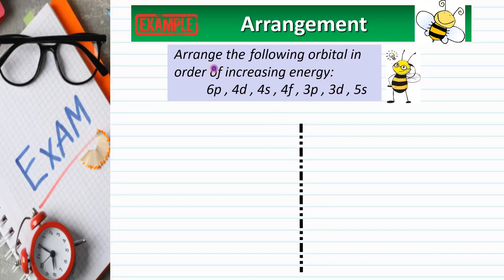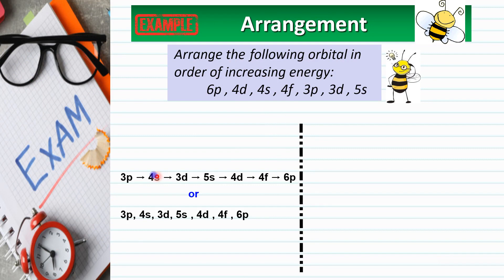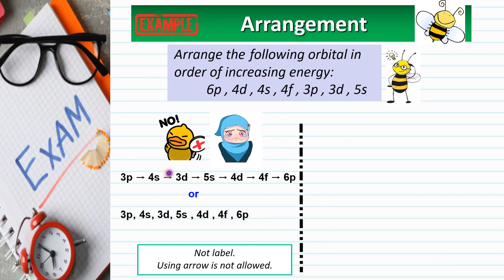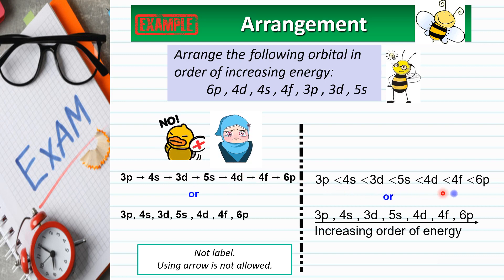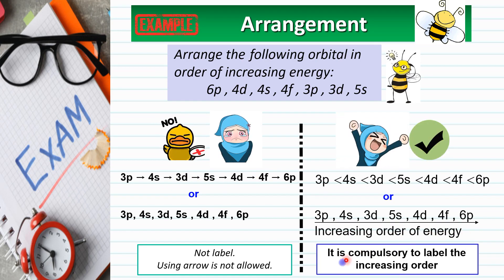This is an example of a question that involves an arrangement. The first sample answer is incorrect because the arrangement is not labeled — please remember, arrows are not allowed in the arrangement itself. The second answer is correct. You can choose to use either the 'less than' symbol or a comma between items, but please remember you must draw an arrow below the arrangement to show the increasing order. It is compulsory to label the direction of order.